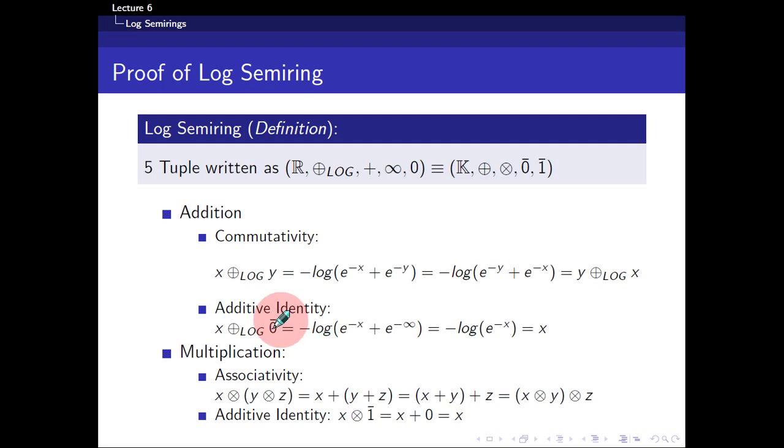And then the presence of the additive identity, well, so x plus zero bar. By definition, it's equals to this, negative log of e power minus x plus e power negative infinity. Now, if you're a mathematician, you'd probably be cringing right now.